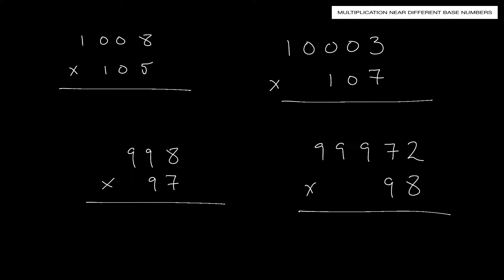Similarly in this problem, we're working close to base number 1,000. 97 is close to 100. Up here, the number 10,003 is very close to base number 10,000, and 107 is close to base number 100. And here we have something closer to base number 100,000, and then base number 100 again.